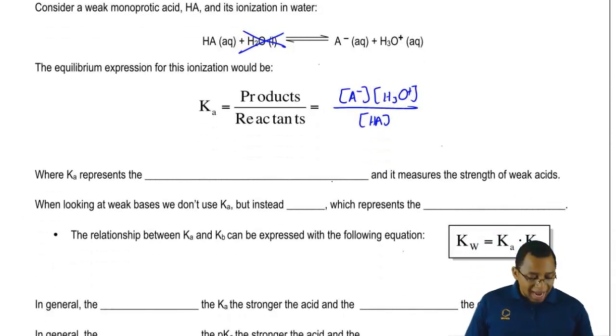Now we're going to say that Ka represents our acid dissociation constant. It basically measures how strong our weak acids are. We're going to say weak acids use Ka, weak bases don't use Ka.